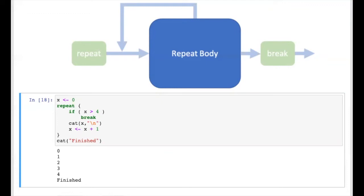You may wonder why repeat exists if you can simply use a while loop. In many cases, while, for, and repeat can be used almost interchangeably, so it will be up to you to decide what works best. One key difference is that repeat does not force you to check a condition before entry into the body — conditional checks can be delayed until the end of the loop body, providing a bit more flexibility than the while statement.